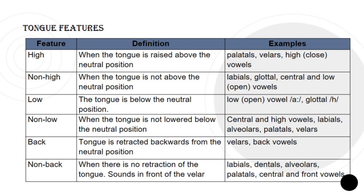Low: the tongue is below the neutral position — examples are low and open vowels, such as 'ah', and the glottal. Non-low: when the tongue is not lowered below the neutral position — examples are central and high vowels, labials, alveolars, palatals, and velars.